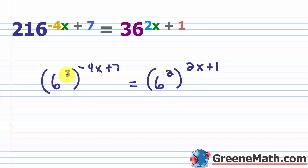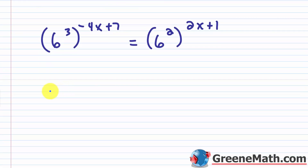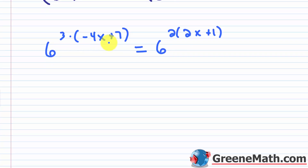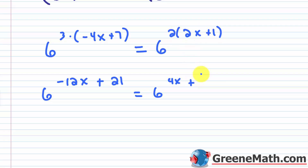Here's where people make mistakes: make sure the three and the two each get multiplied by the whole quantity. Using the power-to-power rule with parentheses: three times the quantity negative four x plus seven, equals six to the power of two times the quantity two x plus one. Distributing: three times negative four x is negative 12x, and three times seven is 21. On the right: two times two x is four x, and two times one is two.